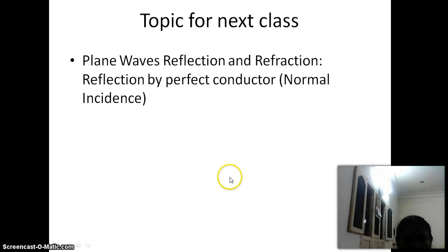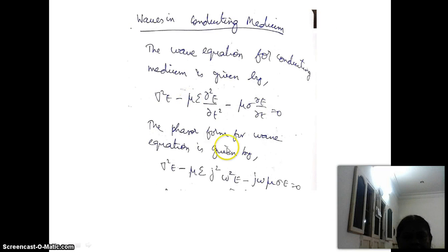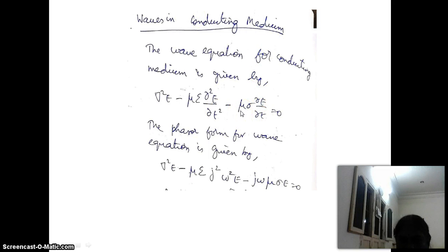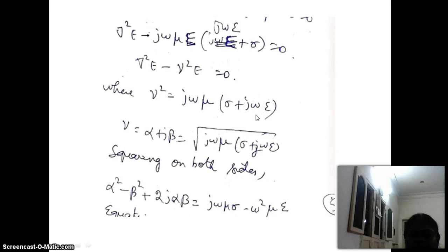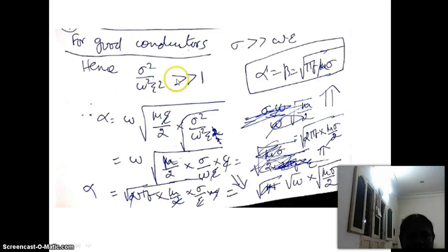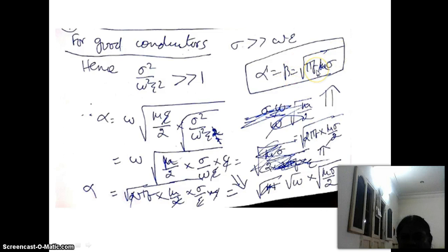To conclude: we have derived expressions for waves in conducting medium. Previously we used a different set of wave equations for dielectrics; for conducting medium we include an additional term due to conductivity. We represented the equation in phasor form and derived expressions for the attenuation constant, phase constant, and also noted that the loss tangent is sigma over omega epsilon, arriving at alpha equals beta equals the square root of pi f mu sigma.